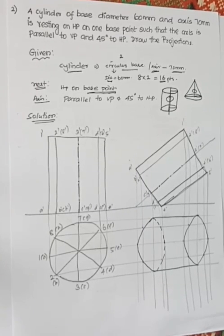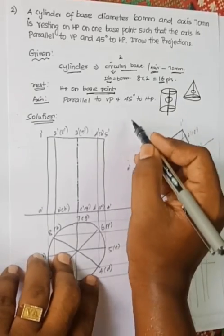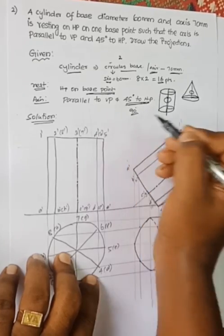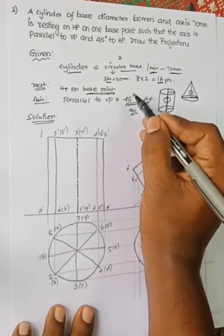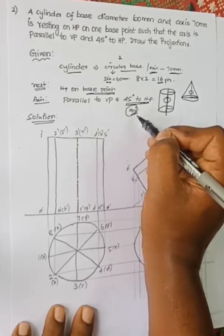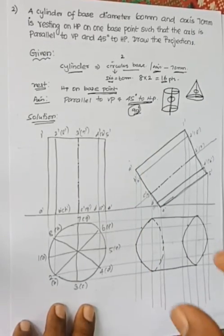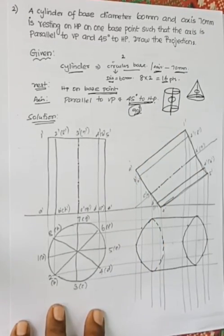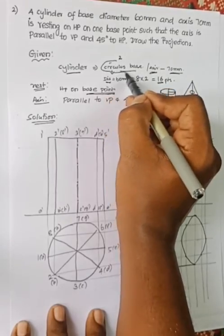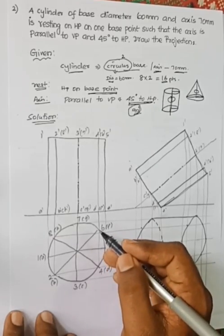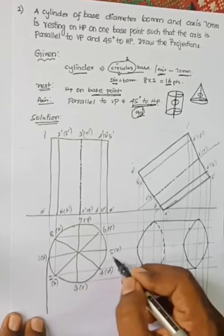The axis condition is: axis is parallel to VP and inclined 45 degrees to HP. As in the previous problem, for the simple position we make the inclination perpendicular. For any inclination to HP, we make it perpendicular so we can draw the simple position. So the axis of the solid is perpendicular to HP, meaning we can draw the true shape circle in the top view.